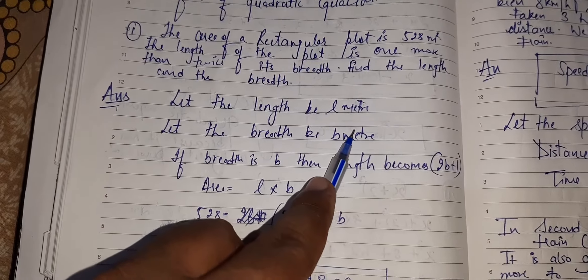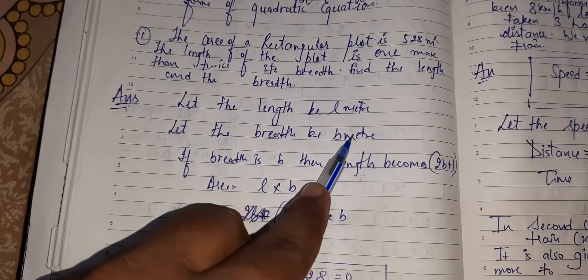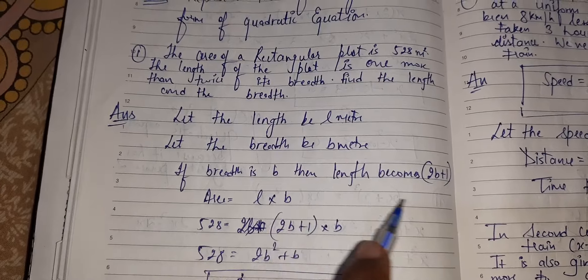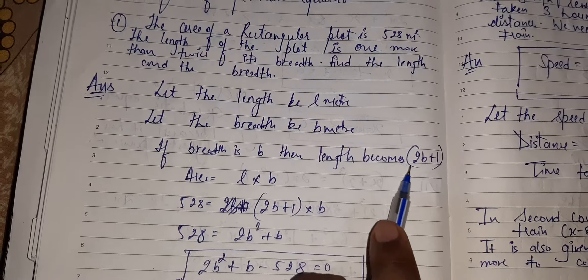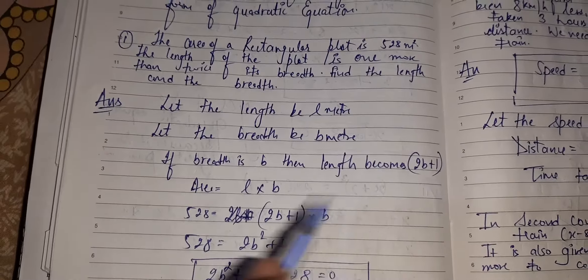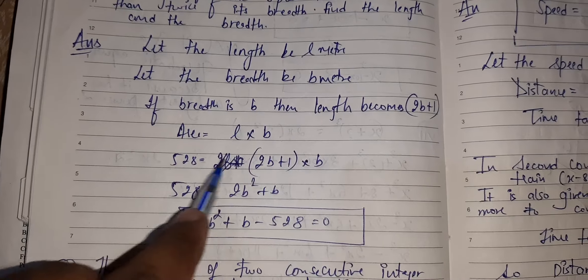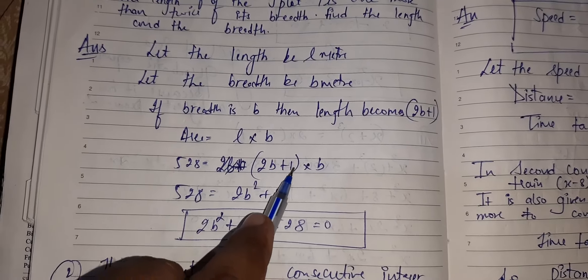Let the length be L and the breadth be B. It says the length is 1 more than, plus 1, twice its breadth, 2B. Got it? Area is L into B.